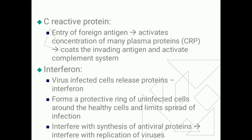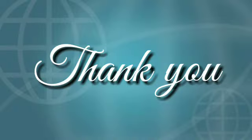Applied aspects: first, C-reactive protein — whenever a foreign antigen enters, it increases the concentration of many plasma proteins, one of which is C-reactive protein. Its function is to coat the invading antigen and activate the complement system. Second, interferon — interferon is secreted by virus-infected cells and is also a protein. Its functions are: it forms a protective ring of uninfected cells around healthy cells, limiting the spread of infection; and it interferes with the synthesis of antiviral proteins, thereby interfering with the replication of the virus. This concludes the discussion on humoral immunity.